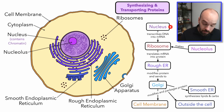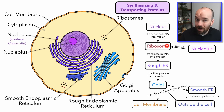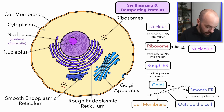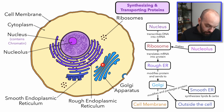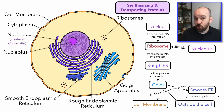Let's do a quick recap. The nucleus contains our genetic material — our DNA — which gets transcribed into mRNA. The mRNA will travel to the ribosomes, which are made by the nucleolus. The ribosomes translate the mRNA, read those instructions, and assemble a protein out of amino acids. The protein travels through the rough endoplasmic reticulum where it gets modified, then gets sent to the Golgi apparatus to be packaged, and from there travels to wherever it needs to go — the cell membrane, outside of the cell, or to another organelle such as the smooth ER, whose job it is to synthesize lipids and carbohydrates.